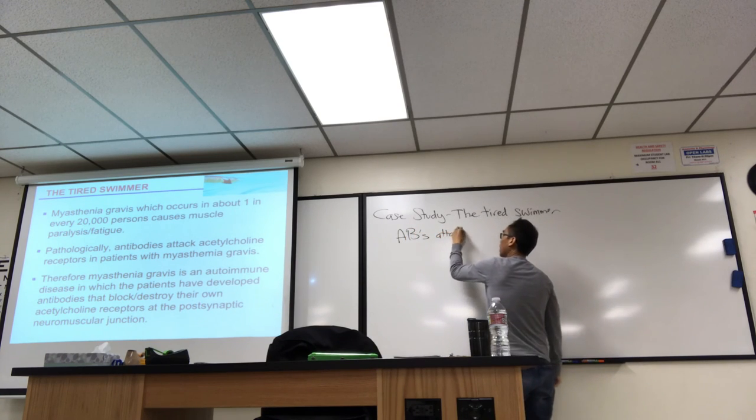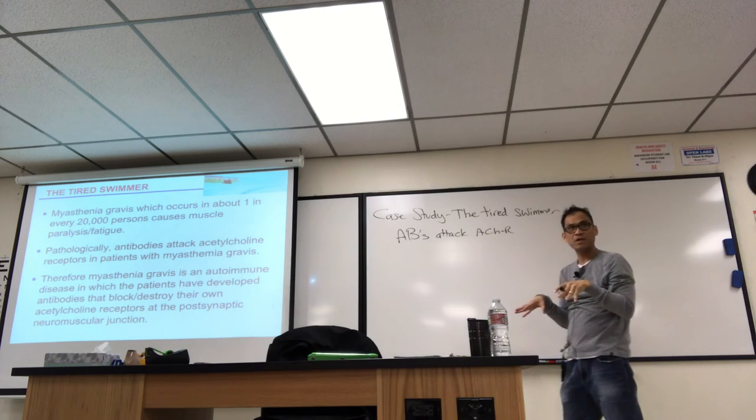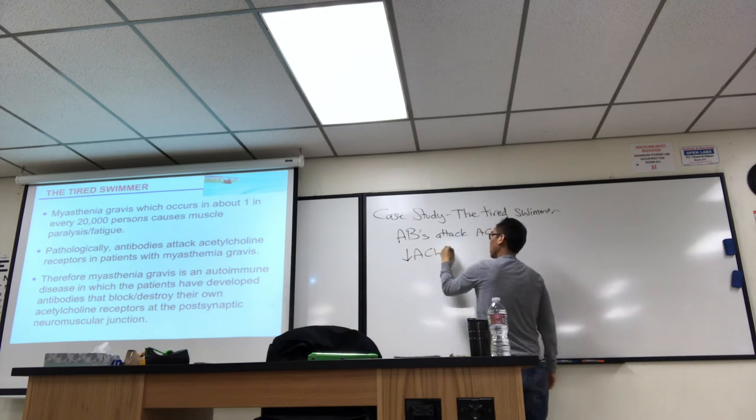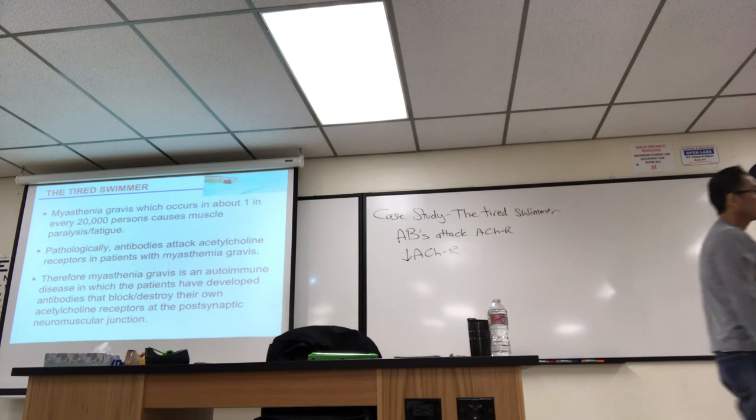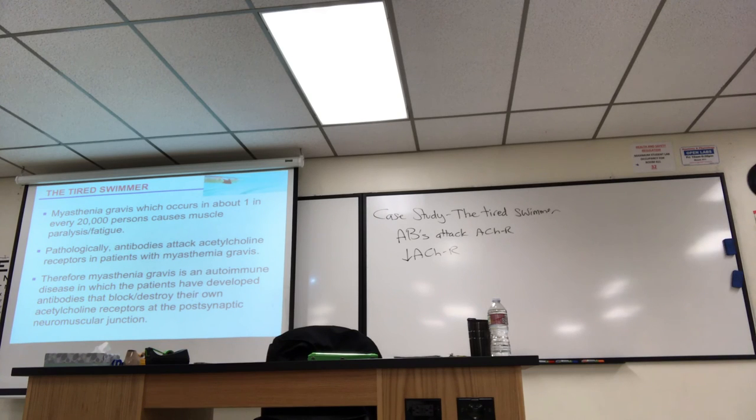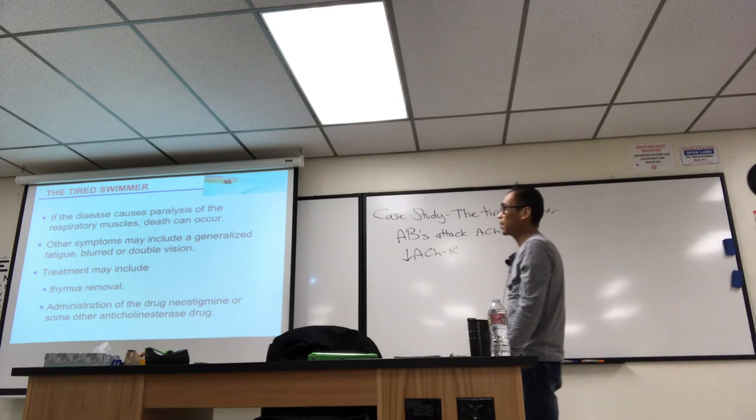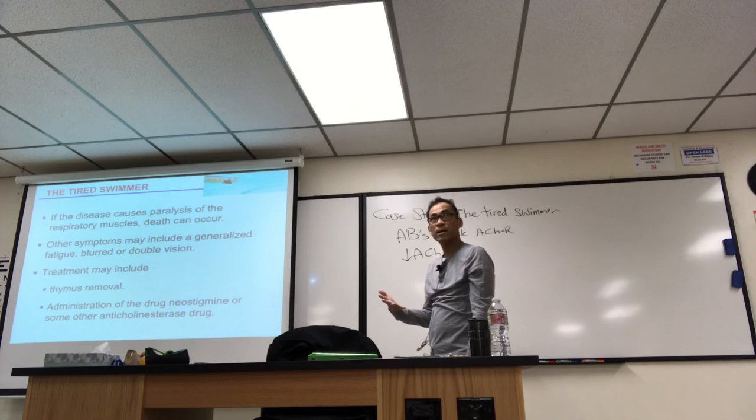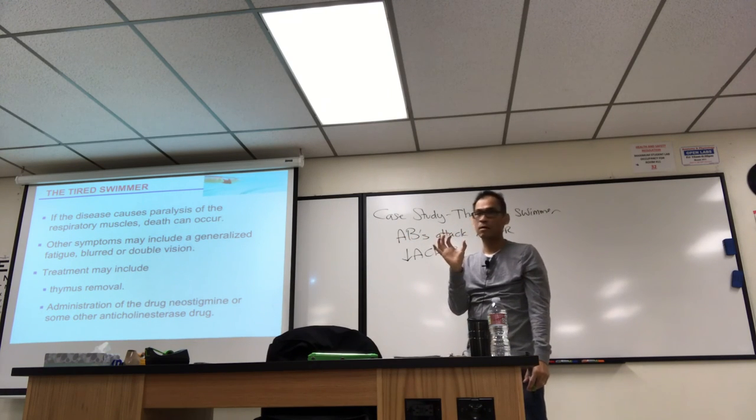What you need to understand is antibodies are attacking your acetylcholine receptors. Therefore, you're going to have reduced functional acetylcholine receptors. So how is that going to affect muscle? Those are in the postsynaptic membrane, right? If disease causes paralysis and the respiratory muscles, death can occur. Other symptoms include generalized fatigue, blurred, double vision, because muscles in the eye - not just muscles that move your eye, but muscles that control the focus of the lens, called lens accommodation - can be affected.